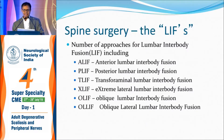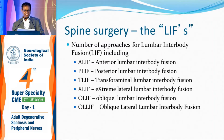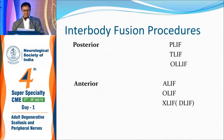What are the different ways of doing interlumbar fusion? ALIF is anterior lumbar interbody fusion. PLIF is posterior lumbar interbody fusion. TLIF is transforaminal interbody fusion. XLIF is extreme lateral interbody fusion. OLIF is oblique lumbar interbody fusion. OLLIF is oblique lateral lumbar interbody fusion. Among these, ALIF, OLIF, and XLIF (also called DLIF) are anterior approaches. PLIF and TLIF are posterior approaches.